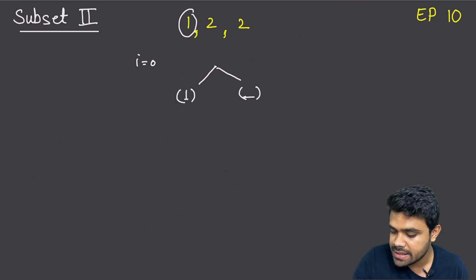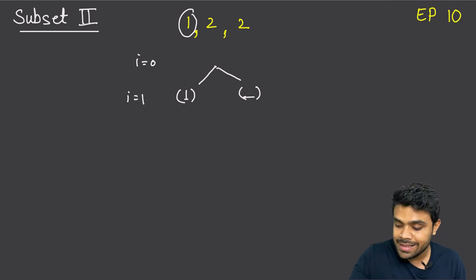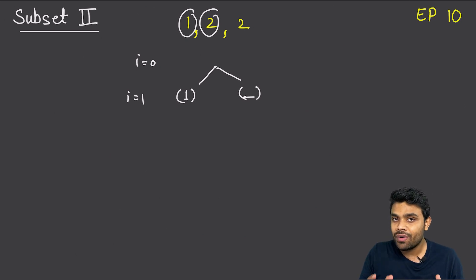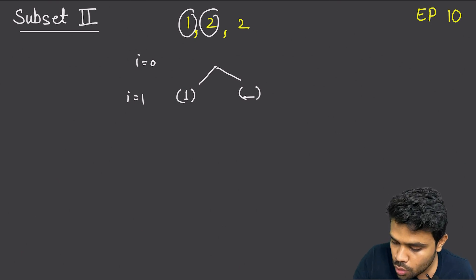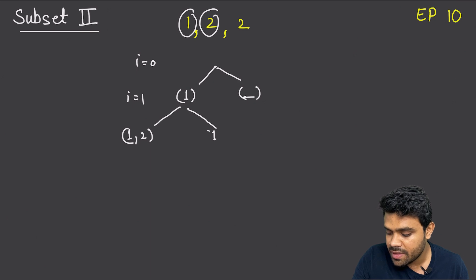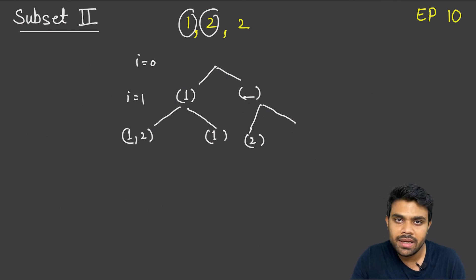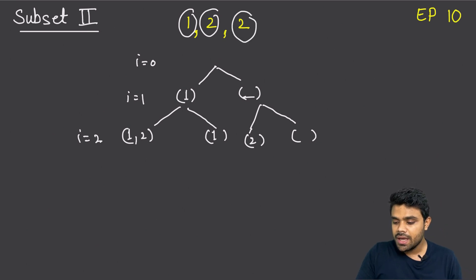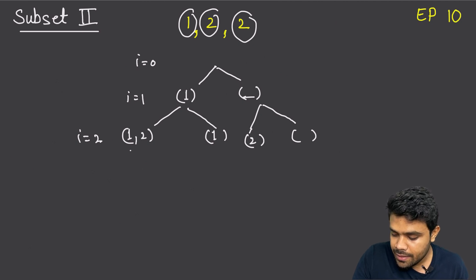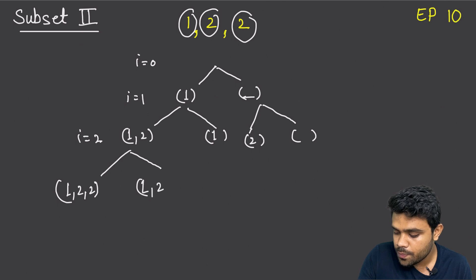Now i is equal to 1, talking about the first 2. Again two options: consider it in, giving [1, 2], or ignore it, giving [1]. For the empty branch: take the 2 to get [2], or ignore to stay empty. At i equal to 2, the second 2: consider it to get [1, 2, 2], ignore to get [1, 2]; or consider to get [2], ignore to get empty.